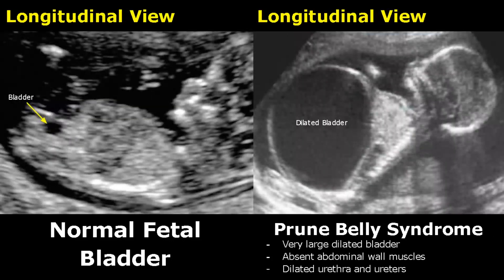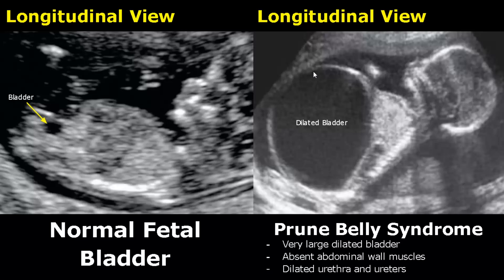In prune belly syndrome, there is a very large bladder that can even occupy the abdomen. The abdominal wall muscles are absent. Here you can see the whole bladder, this layer is also very thin, and the urethra and ureters are also dilated.